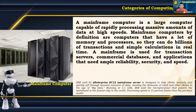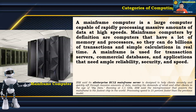A mainframe computer is a large computer capable of rapidly processing massive amounts of data at high speeds. Mainframe computers have a lot of memory and processors, allowing them to do billions of transactions and simple calculations in real time. A mainframe is used for transaction servers, commercial databases, and applications needing ample reliability, security, and speed. IBM's Z Enterprise EC12 mainframe server is designed to securely sift through massive amounts of data. Running at 5.5 GHz, IBM said its microprocessor is the fastest chip in the world, with processing speed 25% faster than the previous model.